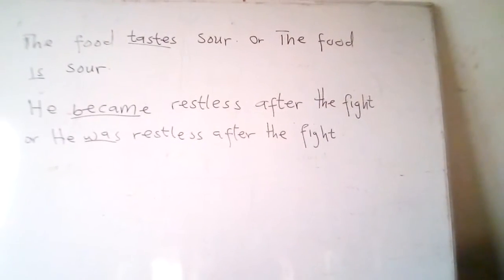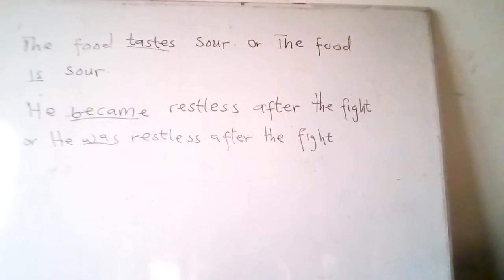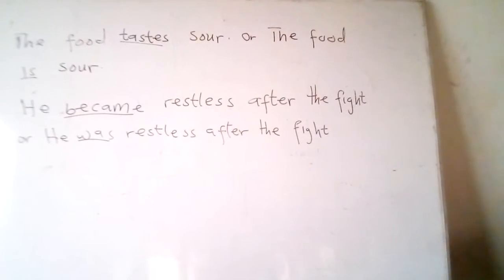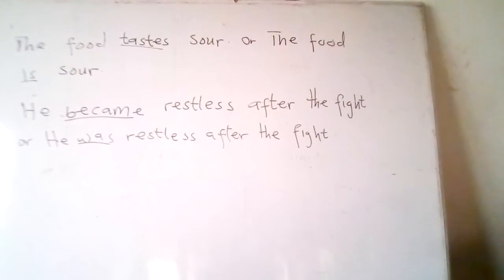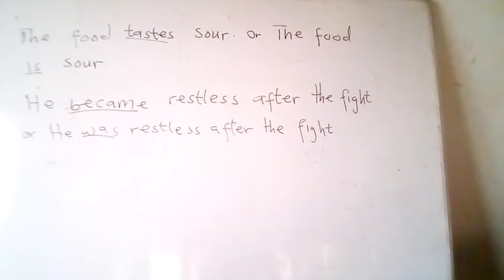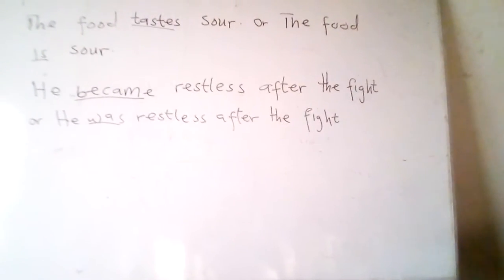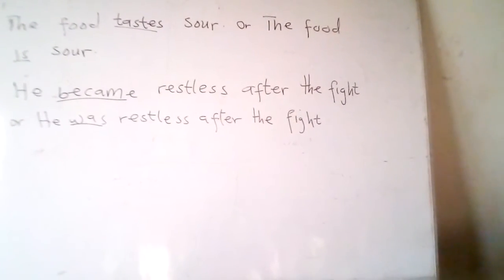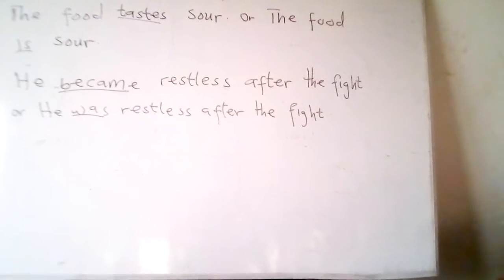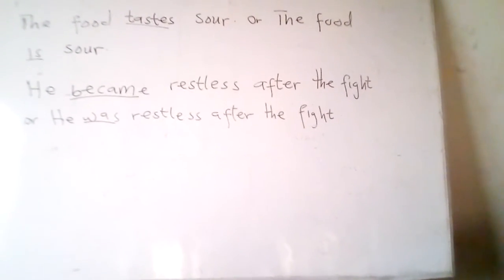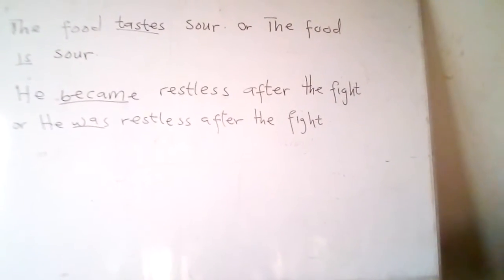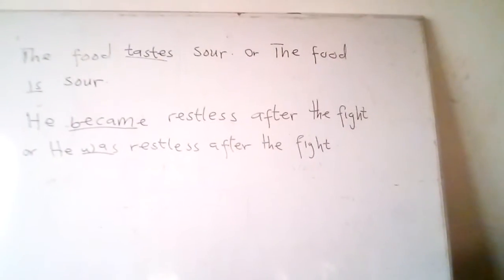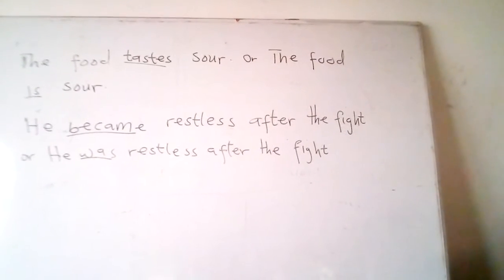Note that a verb can be called a linking verb when the sentence still makes sense even when you replace the verb with 'is', 'was', 'were', or 'are'. For example: 'The boys appear ready for the game' / 'The boys are ready for the game'; 'The boys seemed ready for the game' / 'The boys were ready for the game'.